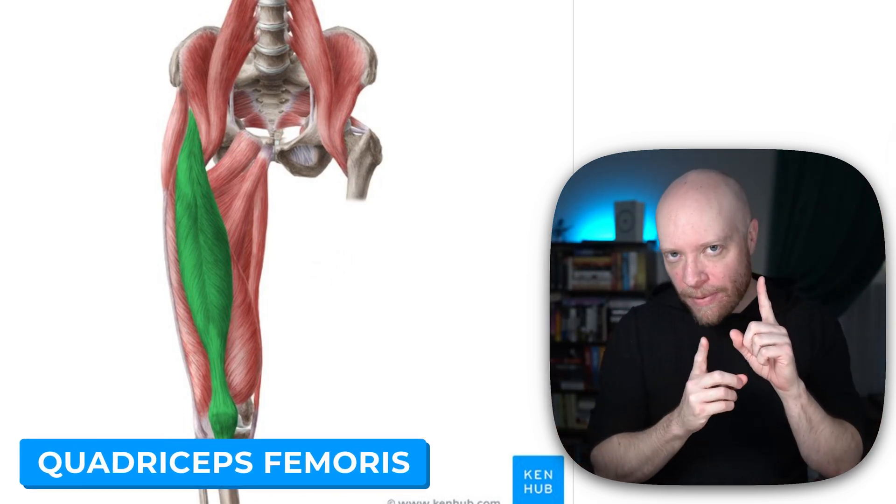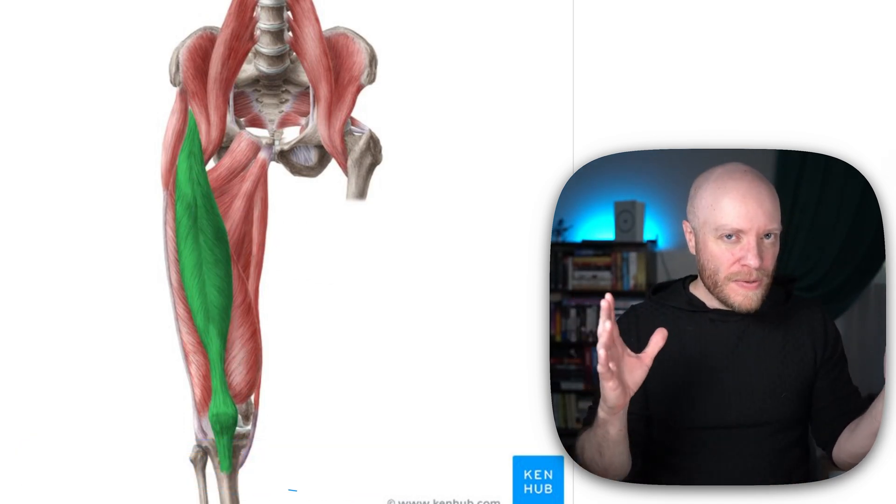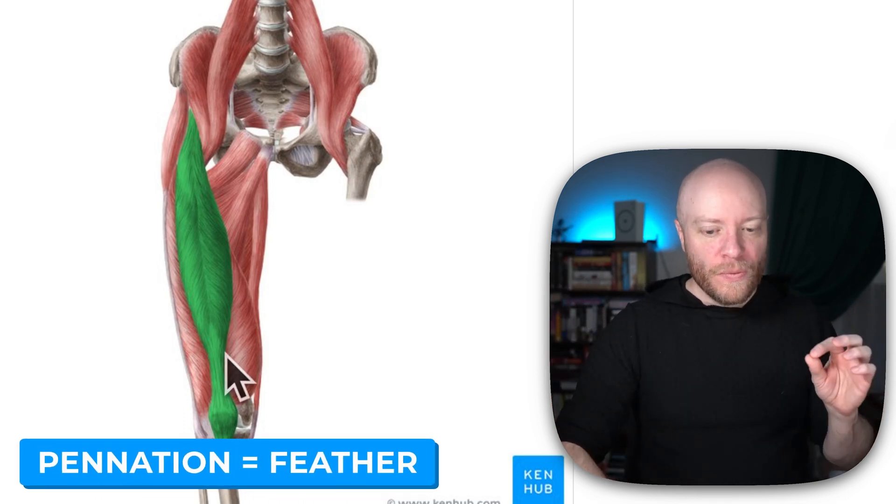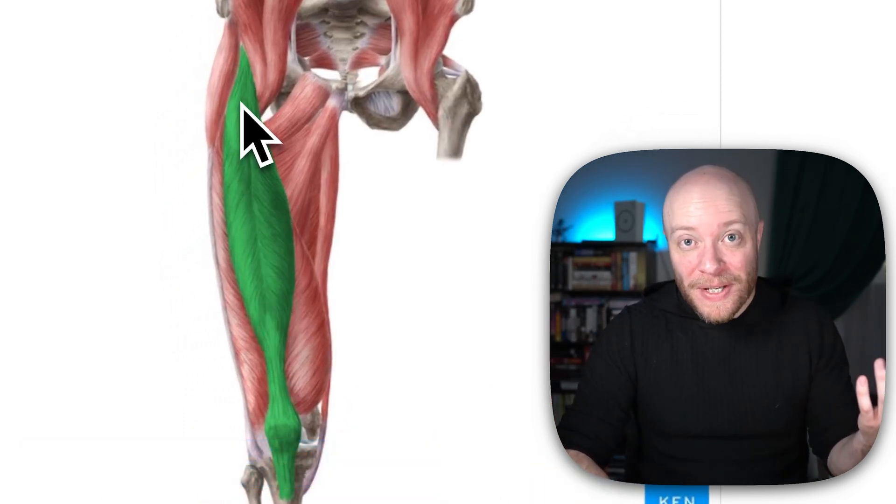But the reason why it's one of my favorite looking muscles is because it's an example of a bipennate muscle architecture, which just means two feathers. So if we look at it closely, you can see there's a central tendon running down the center of the muscle.